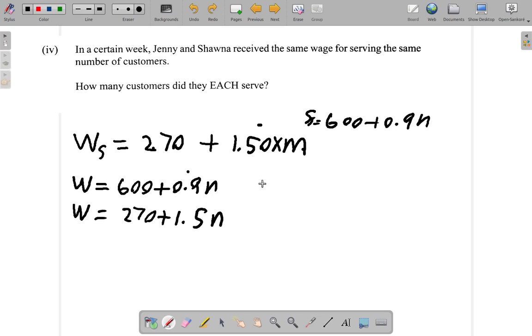Since these two are the same, then I say 600 plus 0.9N is equal to 270 plus 1.5N.